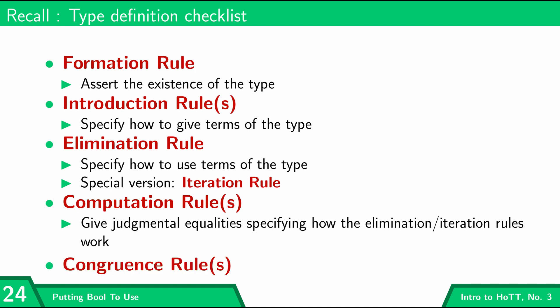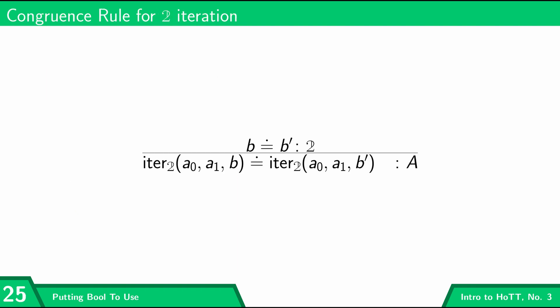The computation rules give judgmental equalities that govern how the iteration or elimination rule works. And then finally there are what are called congruence rules, which we're not going to pay much attention to because they're not very interesting, but if we're being fully formal we do need to include them. These say things like: if I have two judgmentally equal inputs, I'm going to get judgmentally equal results if I use them for iteration. A short way of saying this is that iteration respects judgmental equality.